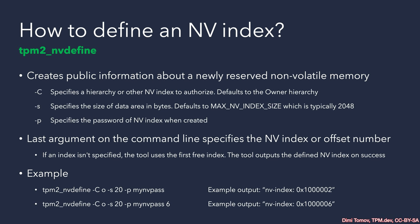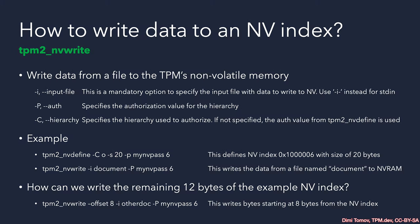Indexes require a hierarchy to be tied to — usually this is the owner's hierarchy. Once we have created our NV index, we can write data to it. The NV index is just a pointer; it allocates space for us in the NV RAM. In all TPM2 tools we specify which NV index to use, and the TPM will know where to place our data, including in cases where we don't write the complete size available to a certain NV index.